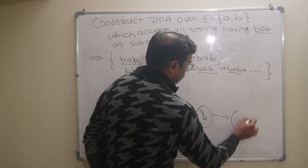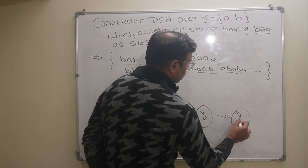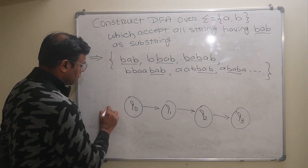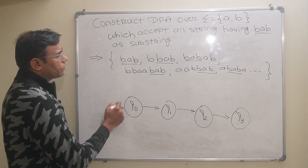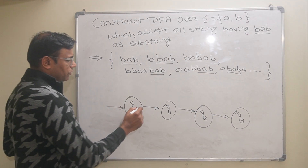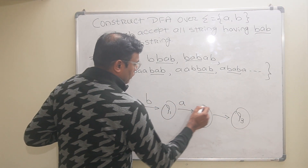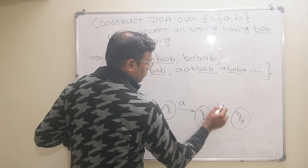I will draw the 4 states here: Q0, then Q1, then Q2, and then Q3. And let us draw the transitions for BAB as the substring — so the transitions will be B, A, B.